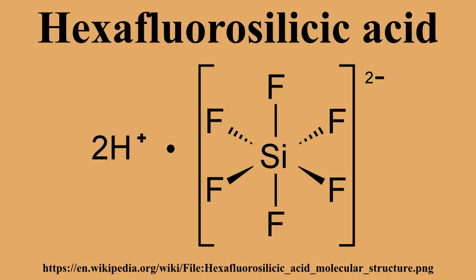Hexafluorosilicic acid can also be produced by treating silicon tetrafluoride with hydrofluoric acid. Neutralization of solutions of hexafluorosilicic acid with alkali metal bases produces the corresponding alkali metal fluorosilicate salts: SiF6²⁻ + 2NaOH → Na2SiF6 + 4H2O. The resulting salt Na2SiF6 is mainly used in water fluoridation. Related ammonium and barium salts are produced similarly for other applications.